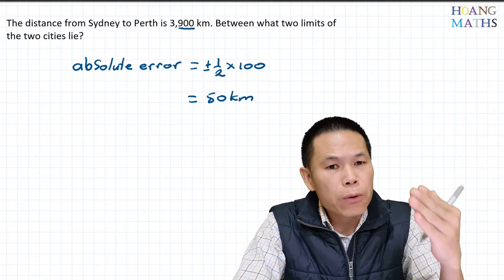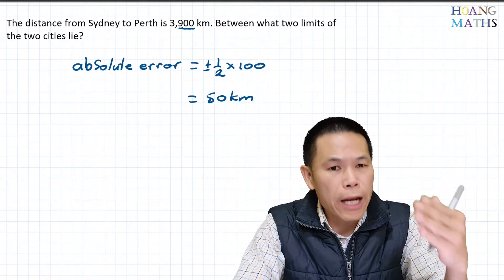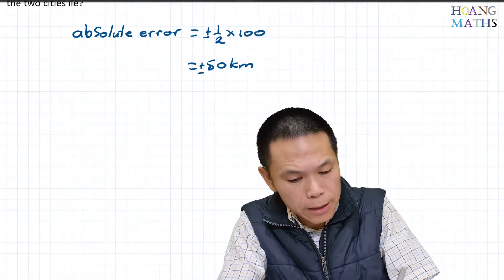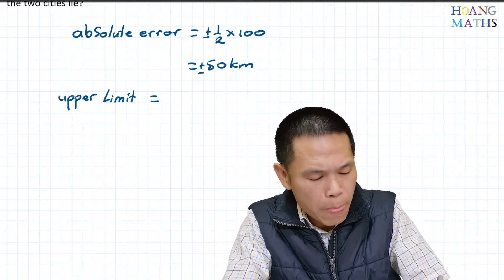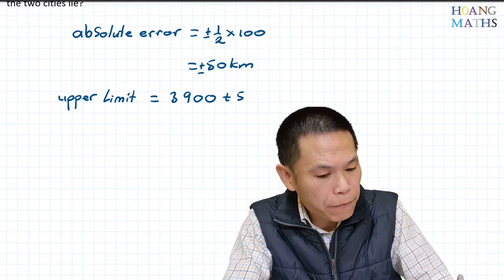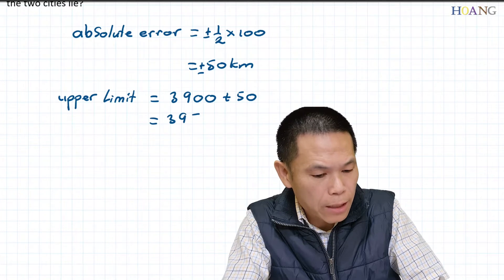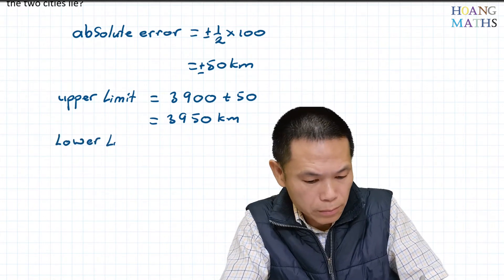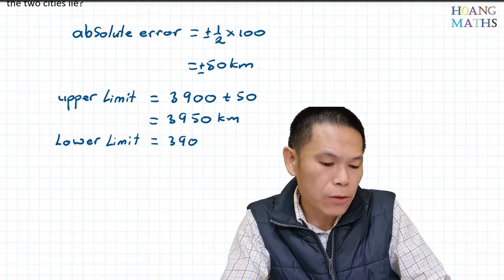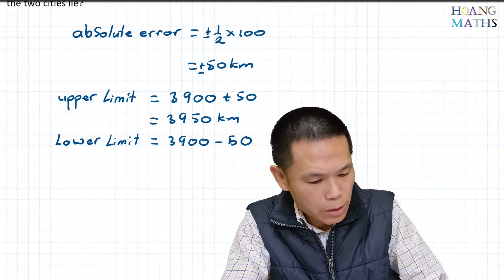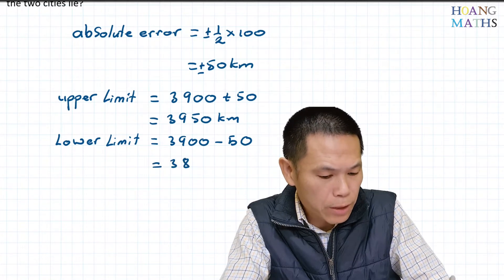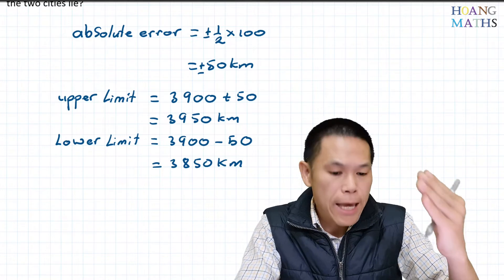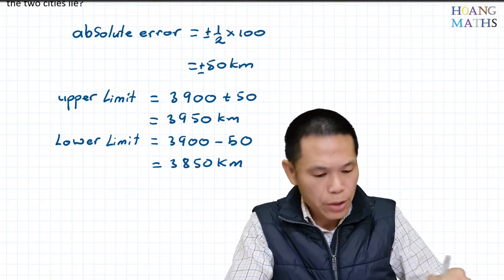The absolute error is half of 100, which is 50 kilometers. Therefore, the lower limit is 3900 minus 50, which equals 3850 kilometers. The upper limit is 3900 plus 50, which equals 3950 kilometers. So the distance lies between 3850 kilometers and 3950 kilometers.